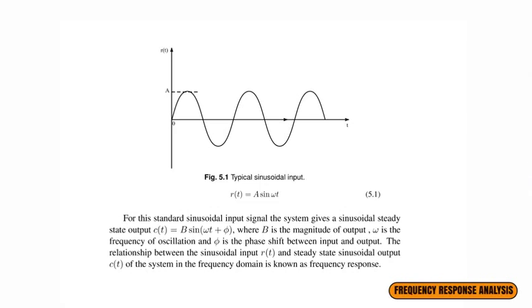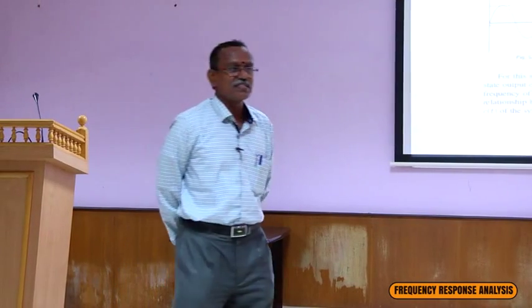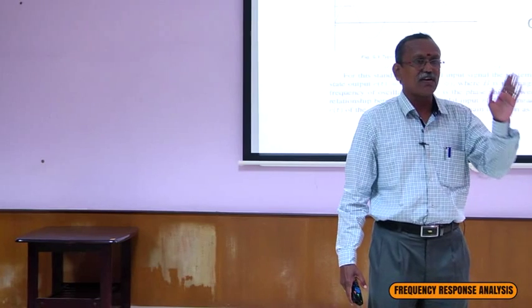Why do we plot only output amplitude and not input amplitude? Because the input signal is r(t) = A sin(ωt), and we vary the frequency from 0 to infinity. The output is c(t) = B sin(ωt + φ). Note that in both input and output, the frequency ω is the same. This is because the system is described by an ordinary linear differential equation with constant coefficients — a linear system.